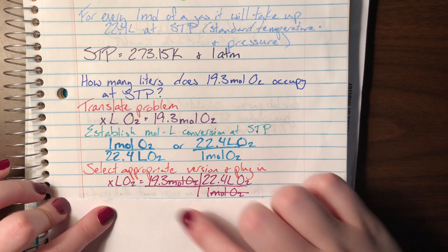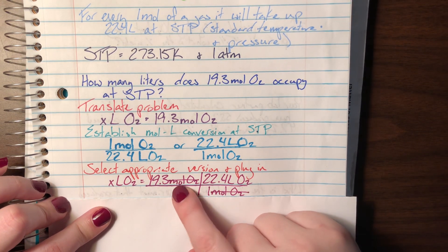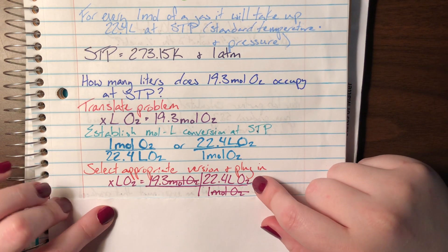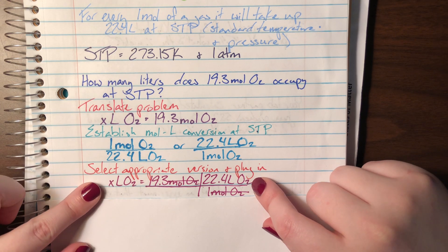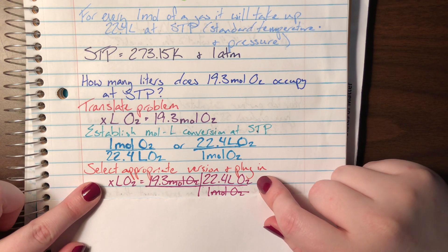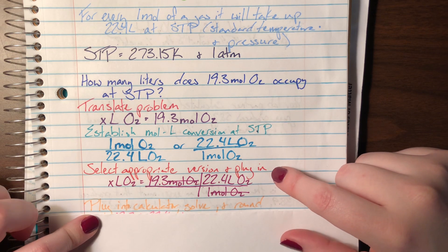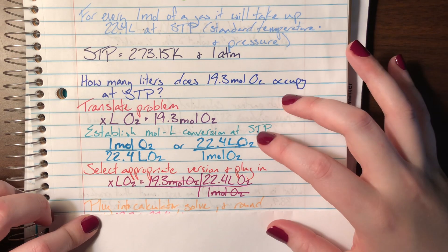When I plug it into the actual train tracks, moles are on top and on bottom so they cancel, leaving me with the unit of liters of O2, which was the unit that I said that I wanted at the very beginning. Which means that I can go ahead and plug it into my calculator, solve it, and round it.